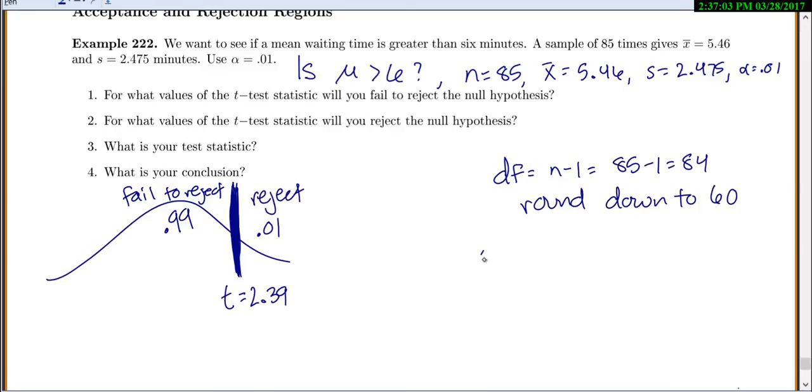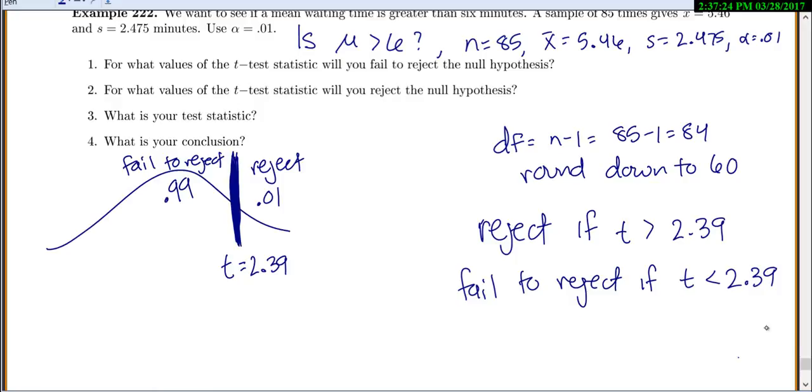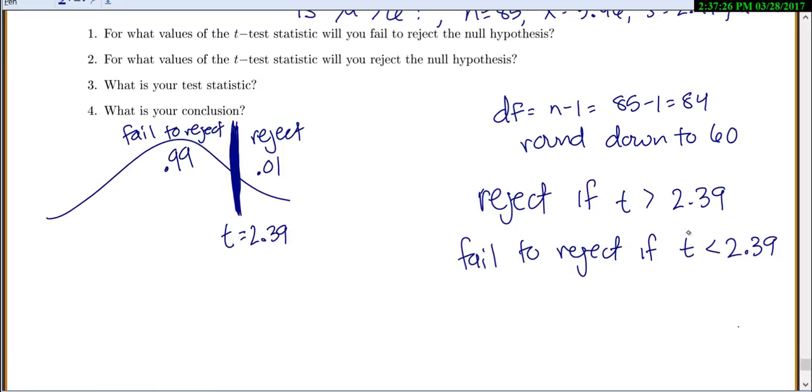So that's our cutoff point. So we'll reject if we get a t-value greater than 2.39. And we'll fail to reject if t is something less than that. So that's number 1 and 2.